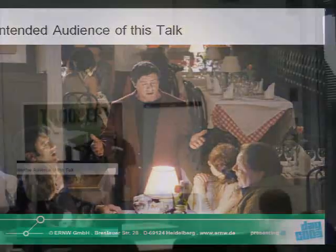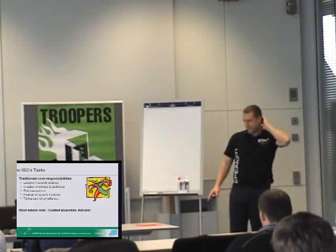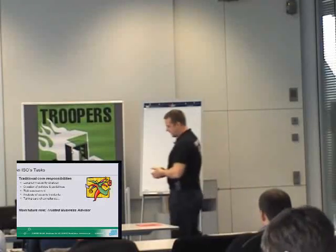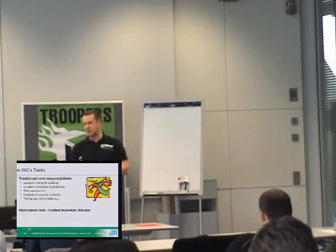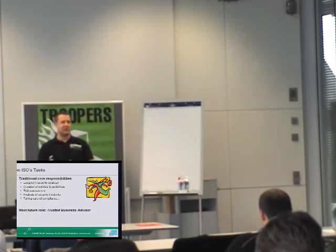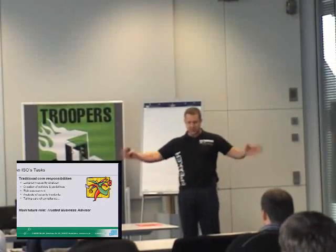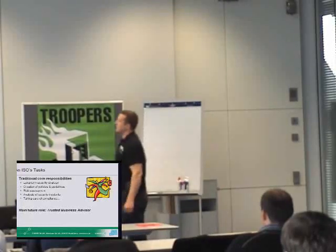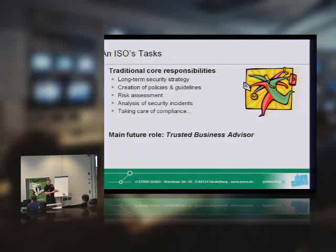An ISO's task: when preparing this talk, I contacted some ISOs I know on a personal level and asked for the five main responsibilities of an ISO. I collected and put those together, and these are the five with the most citations: long-term security strategy, creation of policies and guidelines, risk assessment, analysis of security incidents, and taking care of compliance.